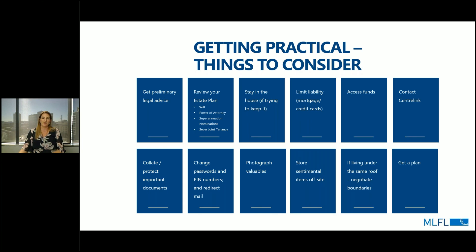Also consider severing the joint tenancy — most married couples own their real estate as joint tenants, which means the surviving joint tenant receives the property upon the death of the other regardless of what the will says. It's quite easy to sever the joint tenancy unilaterally. In terms of limiting liability, if you have a joint mortgage you can continue to draw down on, an overdraft facility, or joint credit cards, you might want to consider cutting off or freezing those facilities so one party can't borrow further funds or take all the money out of a joint account — balancing that with your own access to funds.